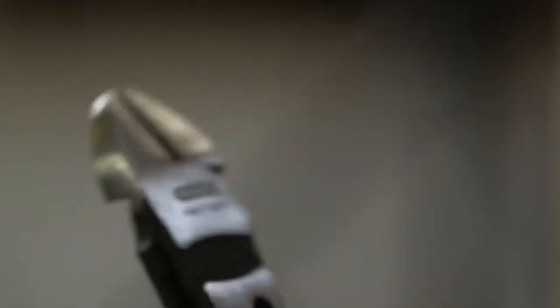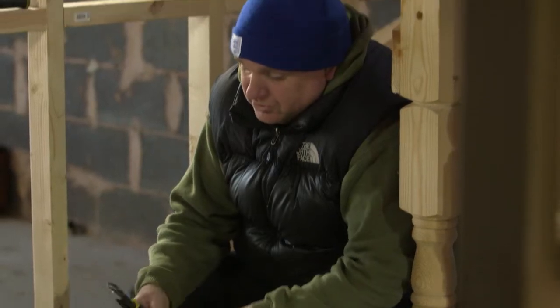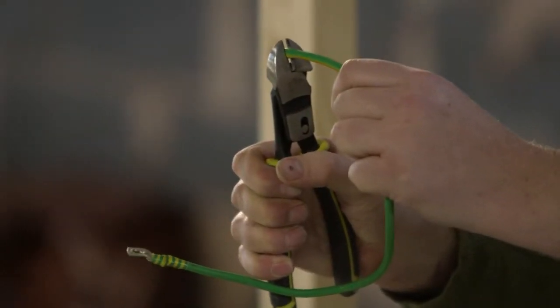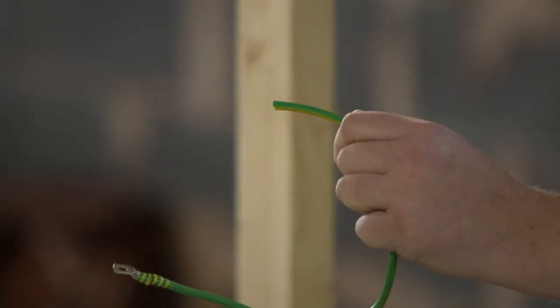This is the new Stanley double pivot action pliers. Two pivots in there gives it twice as much leverage. As you can see, this is a very easy action on that size of cable.